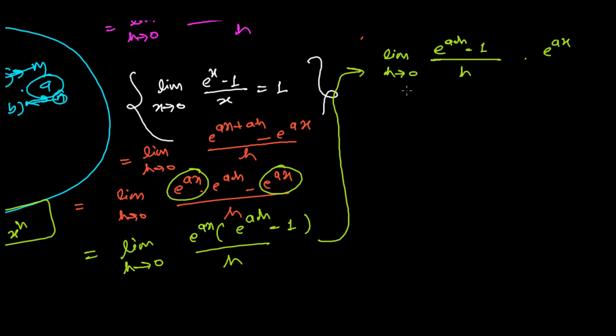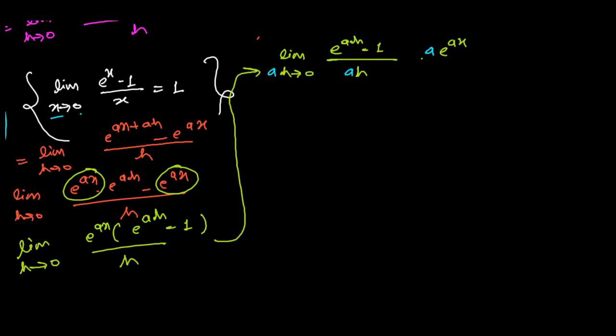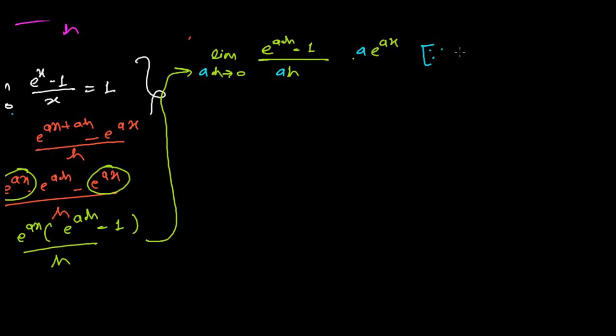The formula is lim(x→0) [e^x - 1]/x = 1, but here we have ah in the exponent and h in the denominator. So I'm going to multiply both by 'a'. I'll also write ah→0 instead of h→0. At the same time, when h→0, definitely ah→0.